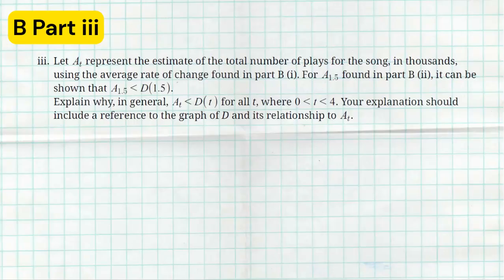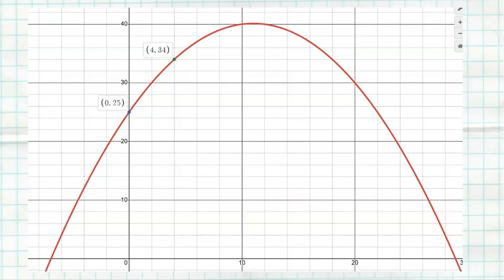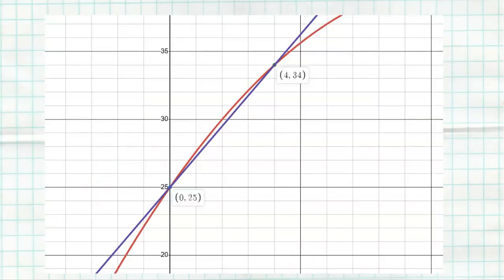All right. And moving on to the third part of part B, it says, let A_t represent the estimate of the total number of plays of the song in thousands using the average rate of change. It could be shown that for A(1.5), it's less than the model predicts at 1.5. Explain why in general, this is always going to be true. The average rate of change is going to be less than the model for all values between zero and four. Your explanation should include a reference to the graph. So you know what I did? I went ahead and made a graph. So here is that graph. And here are those two points. Remember connecting those two points is the average rate of change. And your graph does not have to be this perfect. If you put a graph on your paper, you can just make a really rough sketch of this to kind of understand the concept.